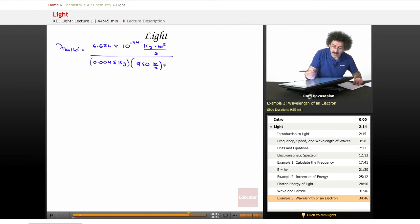And we said it's traveling at 950 meters per second. So second cancels second. Meter cancels one of the meters. Kilogram goes with kilogram. And what you end up with is 1.5 times 10 to the negative 34 meters.